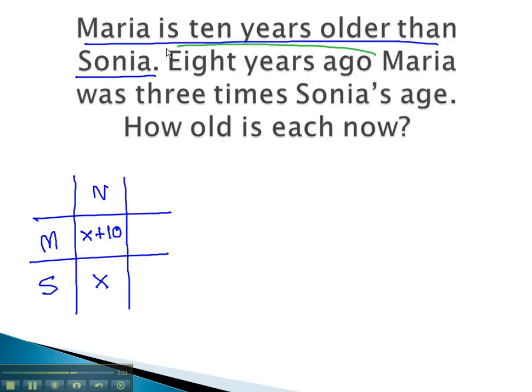The next part of our sentence tells us the change in time. Eight years ago, we must subtract 8 from both cells, giving us x plus 2 and x minus 8 for Maria and Sonia's age.